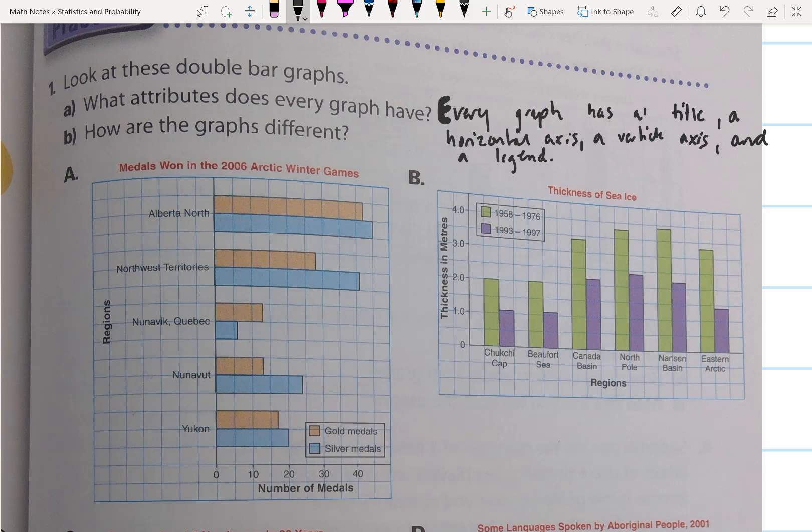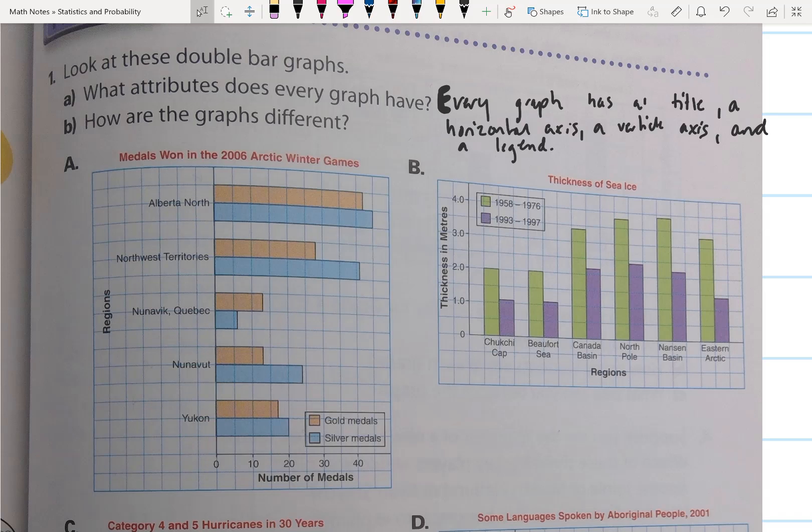Question B asks how are they different? So if we look at these two graphs, we can see that the scale of each is different. This graph's scale goes up by 5, and this graph's scale is equal to 0.5.